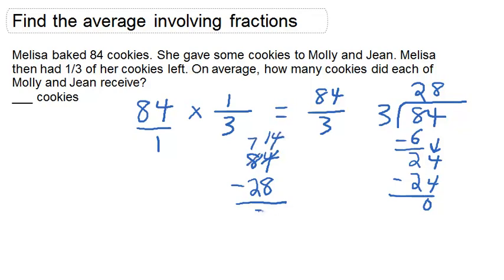And this ends up being 56. So this is the number of cookies that Molly and Jean had.